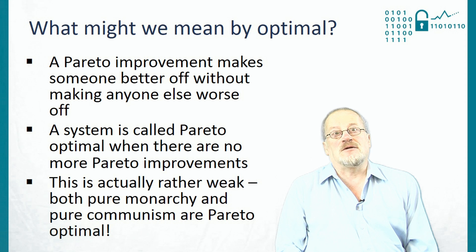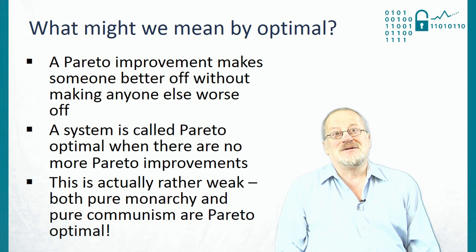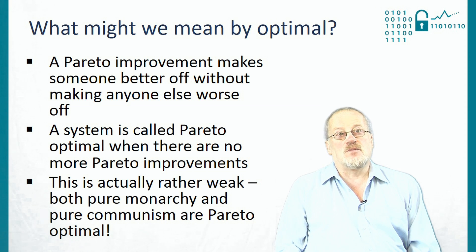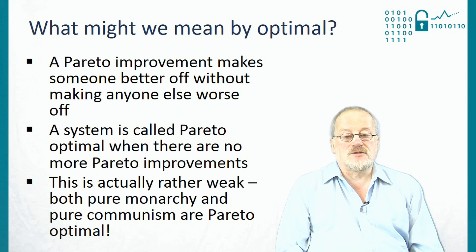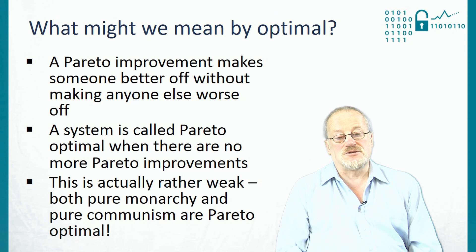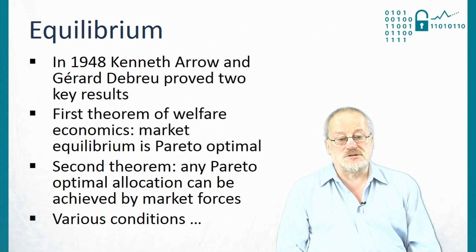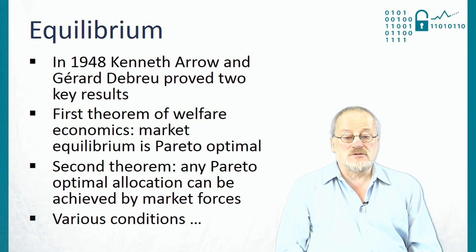In pure monarchy, where the king owns everything, you can't give anybody else anything without making the king worse off. In pure communism, where everybody gets exactly the same, you can't give anybody more without making somebody else worse off. So this is a very weak condition giving a very broad concept of efficiency. Given this broad concept, there are a couple of interesting theorems due to Kenneth Arrow and Gérard Debreu in 1948 — the first and second theorems of welfare economics. The first theorem says that market equilibrium is Pareto optimal, and the second says that any Pareto optimal allocation can be achieved by market forces.